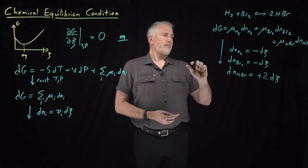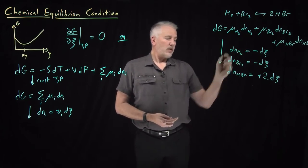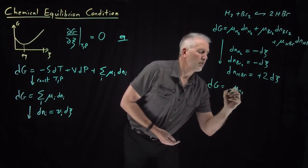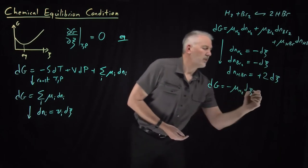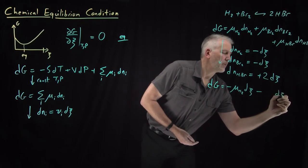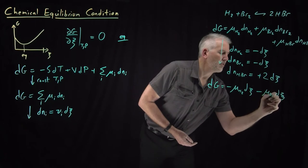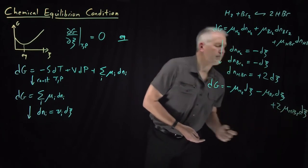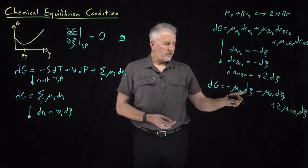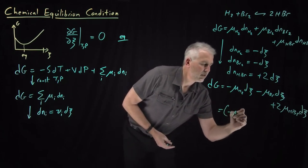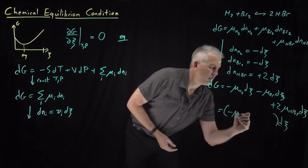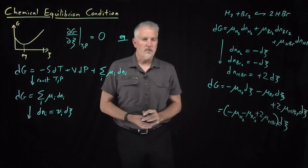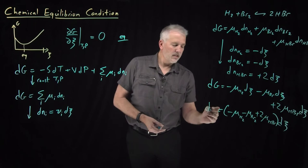With those substitutions, I insert dN(H₂) = (-1)·dξ and similarly for the others. The equation becomes: dG = μ(H₂)·(-dξ) + μ(Br₂)·(-dξ) + 2·μ(HBr)·dξ. Now that everything is written in terms of dξ, I can factor out dξ: dG = [-μ(H₂) - μ(Br₂) + 2·μ(HBr)]·dξ.